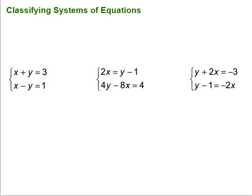In this video, we're going to take a look at classifying systems of linear equations. If we're going to graph systems of linear equations where we have two equations, what we're going to find is that there are three possible things that can happen. One thing is that the lines intersect at one point. Another thing is that the graphs are right on top of each other. And finally, the third thing is the lines never intersect — in other words, they're parallel to each other.